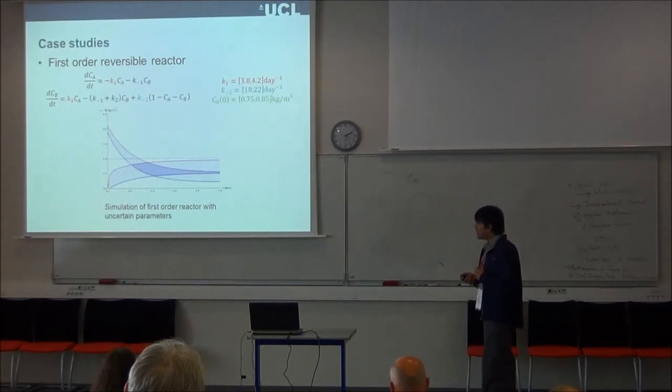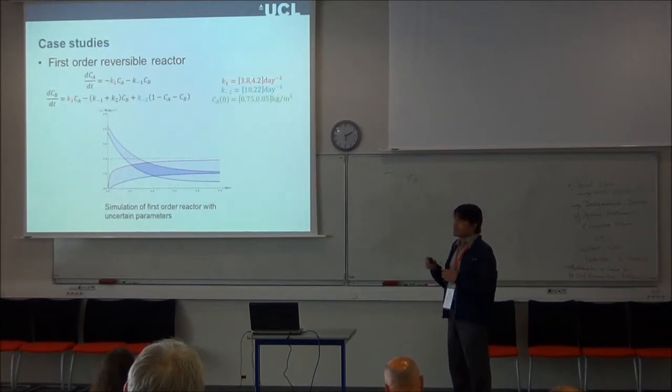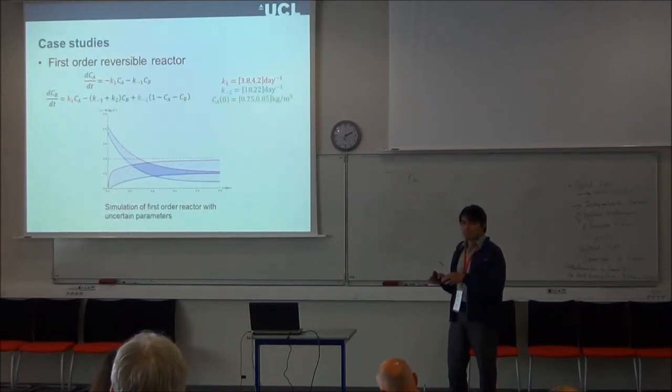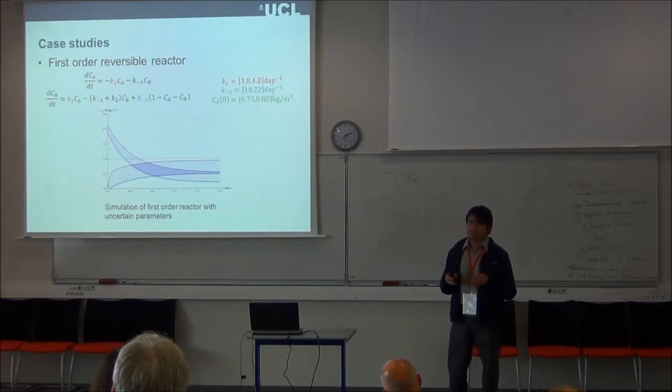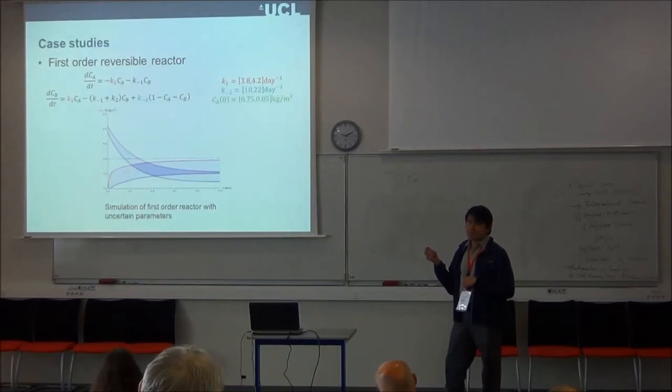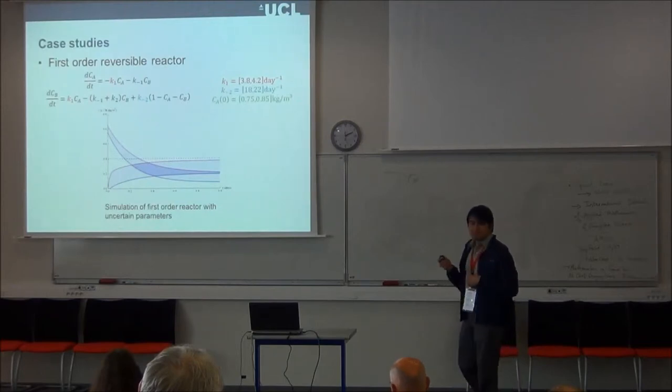Now I present you a first order reversible reactor. The difference from this to the other one is that in this reaction we got some reactants and they are converted into some products, but these products can also react to be converted again into the reactants. So we have set some uncertain parameters, and as this reaction is reversible it is very important to have a range in the initial concentration.